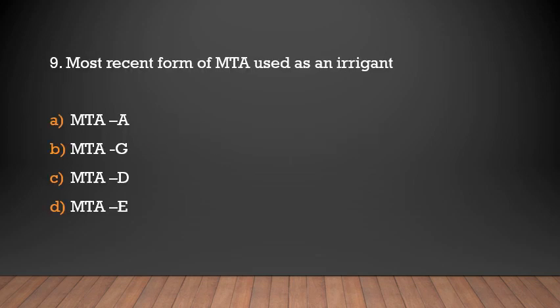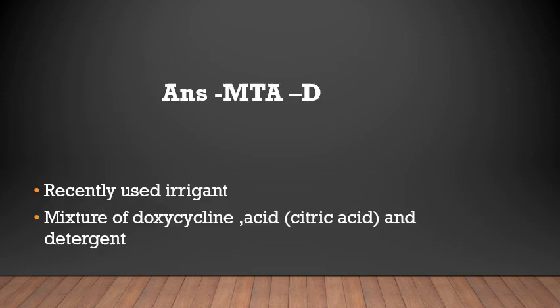Most recent form of MTA used as an irrigant — options: MTA-A, MTA-C, MTA-D, MTA-E. Answer: MTA-D. MTA-D is the mixture of doxycycline, citric acid, and a detergent.